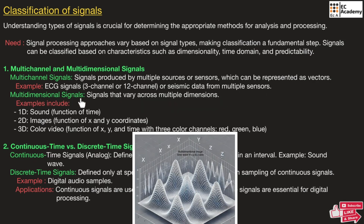Multi-dimensional signals are signals that vary across multiple dimensions. For example, a sound signal is a function of only time, so we call it a one-dimensional signal. An image is a function of X and Y, which are spatial coordinates, so it is known as a two-dimensional signal. Color video is a function of X, Y, and time with three color channels — red, green, and blue — so it is known as a three-dimensional signal.